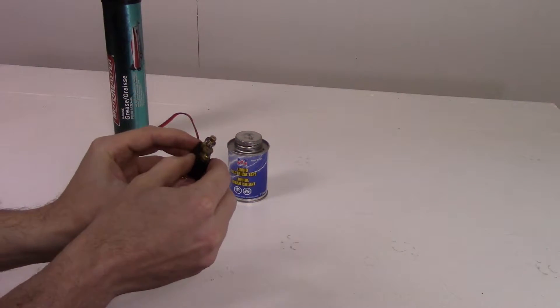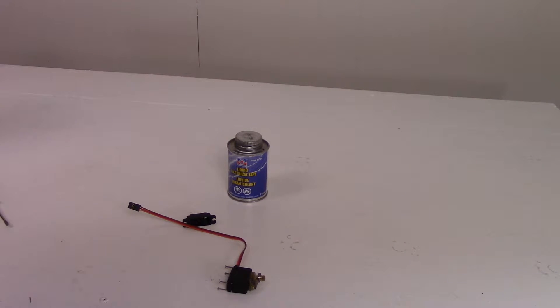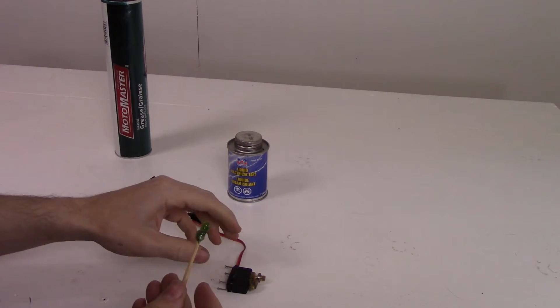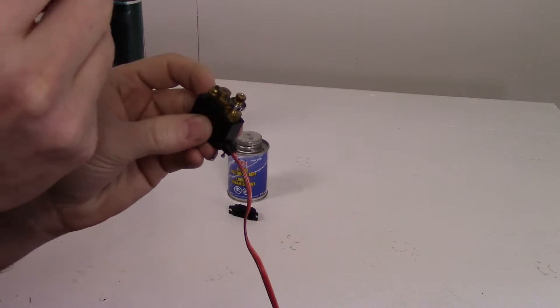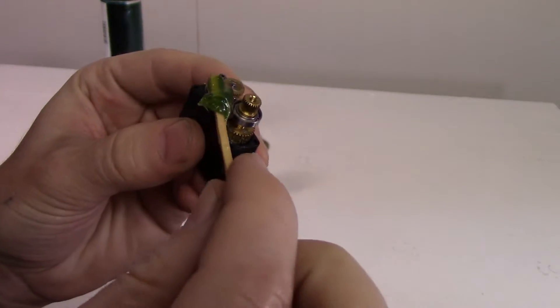Here's where we're going to use the marine grease. Let's get some out of here. You're going to want to get the most amount of grease around the servo horn.